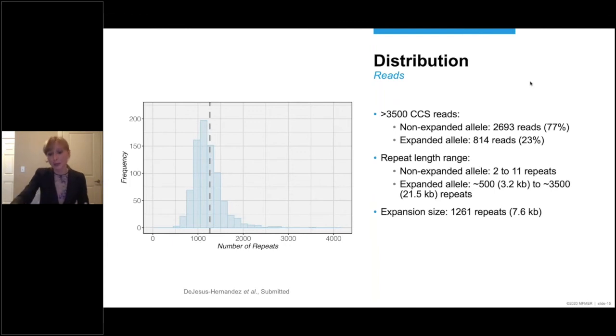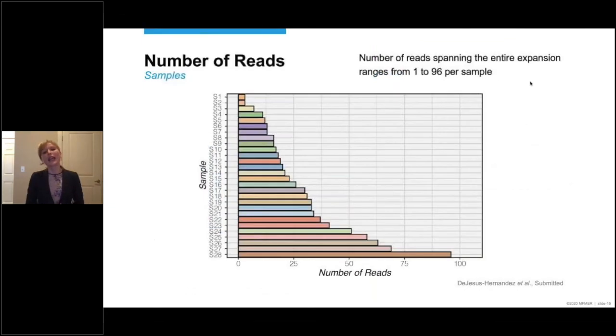And this is an example of a bar graph showing every individual sample 1 to 28 on the x-axis. And every bar represents the number of reads. And clearly, you can see that there is a lot of variability. For some individuals, we only captured 1 read. And for others, almost 100. In the next few slides, I will provide a couple of explanations that might at least account for some of this variability.